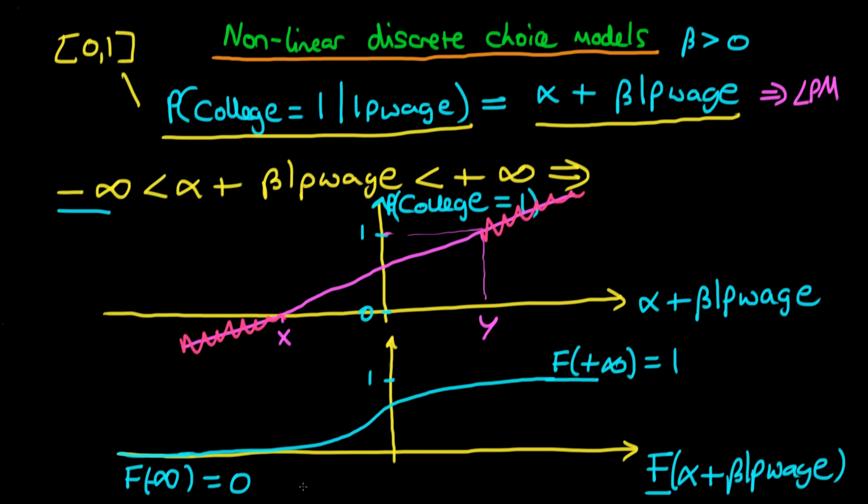We're going to talk about the explicit functional form or some particular types of functions which can actually do this type of behavior. But the idea with a nonlinear transformation of the independent variables is that now we have the probability that college equals one given our log of parental wage is equal to some nonlinear function of the independent variables—so that's a nonlinear function of alpha plus beta times log wage.